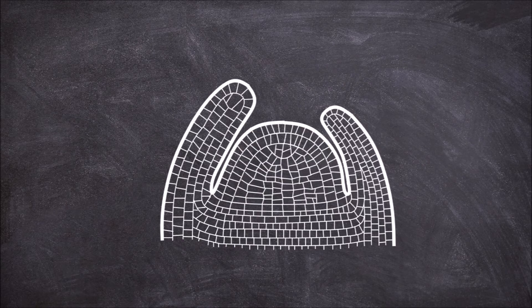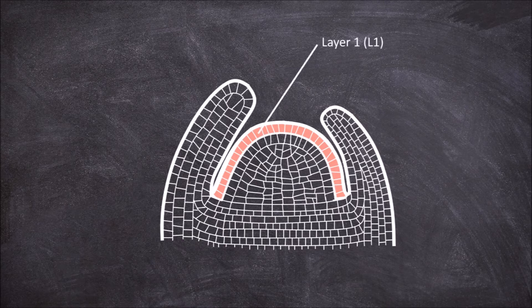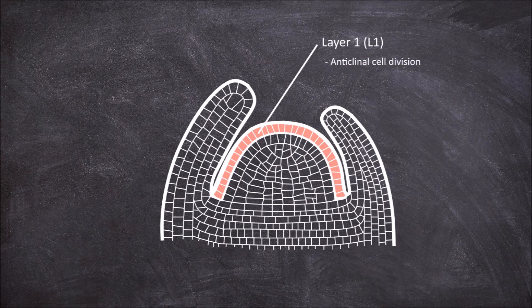The shoot apical meristem also has three layers. Layer 1 is the outer layer. Cell division in this layer is anticlinal which is where the cell walls separating daughter cells are at right angles to the surface of the meristem. Layer 1 gives rise to the epidermis.